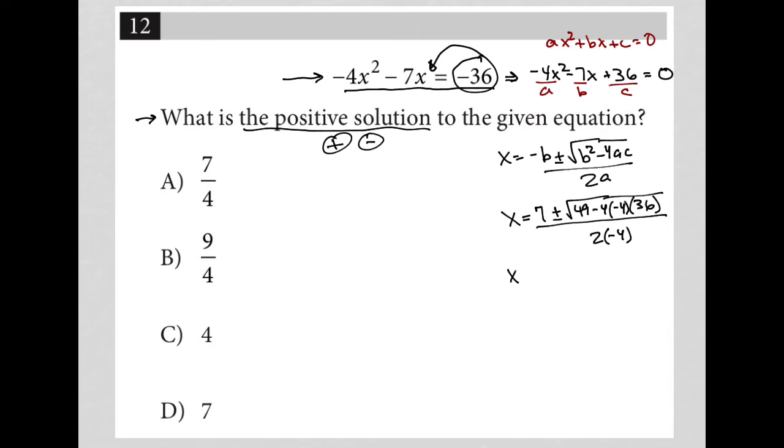All right. So let's simplify this even further. So I have x equals 7 plus or minus square root 49. And then let's do some math here. So negative 4 times negative 4 is 16. 16 times 36, let's go to my calculator to figure that out. 16 times 36 is 576.